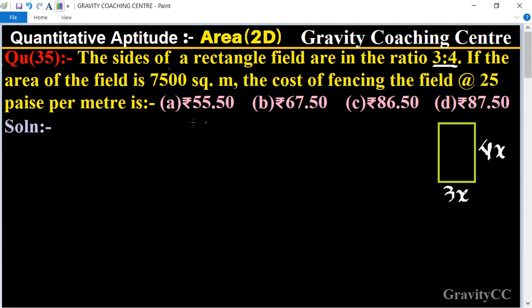According to the question, the area is given as 7500. We know that the formula for area equals length into breadth. So 3x into 4x equals 7500.